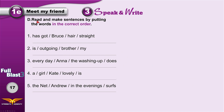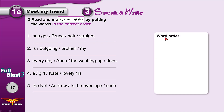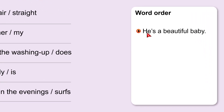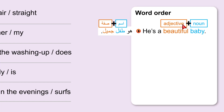Now read and make sentences by putting the words in the correct order. You should know something about word order in English — it's not the same as in Arabic. For example: he is a beautiful baby. Beautiful is an adjective and baby is a noun. In English, we put adjectives before the noun — beautiful baby.